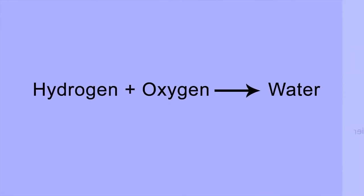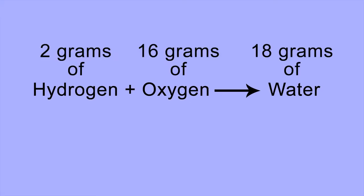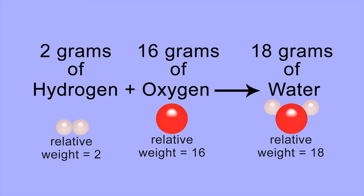This explains why when elements react chemically to form compounds, they do so in fixed proportions by weight. It's all got to do with the relative weights of the atoms combining.